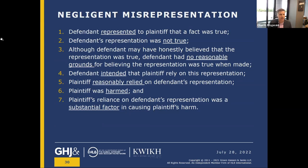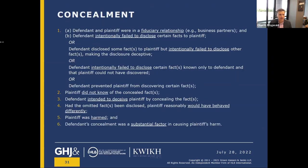Negligent misrepresentation is a slight change: the defendant may have honestly believed the representation was true, but there were no reasonable grounds for believing it was true — a reasonable person should have at least questioned whether it was true. That's the negligence aspect. Concealment is hiding bad facts — you intentionally concealed or failed to disclose a bad fact. Another way to prove concealment is if the defendant and plaintiff are in a fiduciary relationship — business partners, lawyer and client, agent and client — fiduciary duties impose an obligation to be fully forthright with all facts, good and bad.